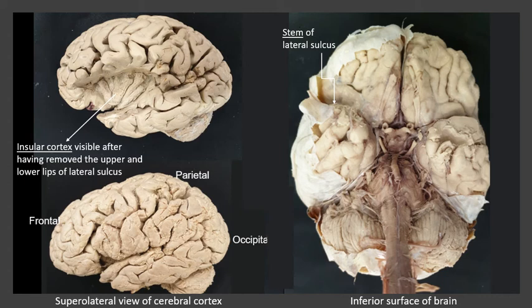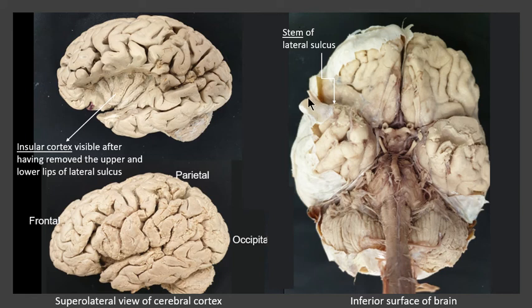It consists of a short stem that then divides into three different rami. Starting with the stem, let's begin with this prosection where you're looking at the base of the brain. You can see that the frontal lobe is at the front, the posterior side is characterized by the cerebellum and brainstem. The stem arises on the inferior surface, more or less close to the center, extending laterally and reaching almost to the supralateral surface of the cerebral cortex, separating the temporal lobe at the back from the frontal lobe in the front.